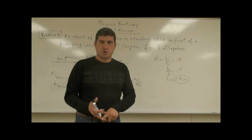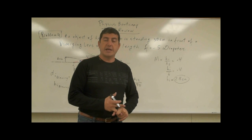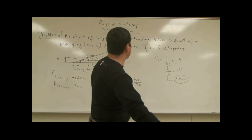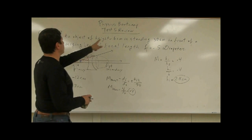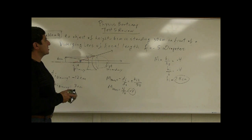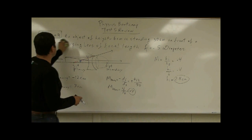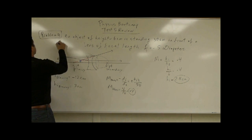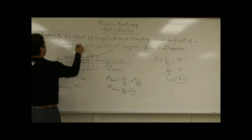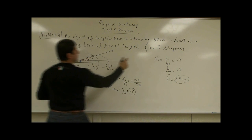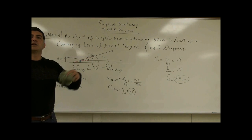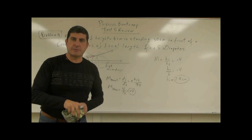So my conclusion: the image is upright, virtual, and diminished. Now what would happen if this problem had said: an object of height six centimeters standing 30 centimeters in front of a converging lens of focal length positive 5? Let's do the ray diagrams for that.